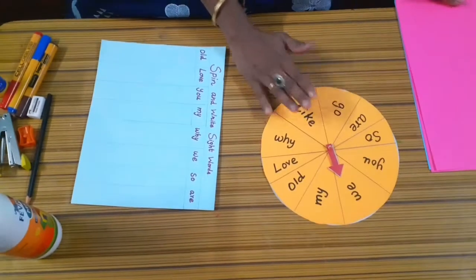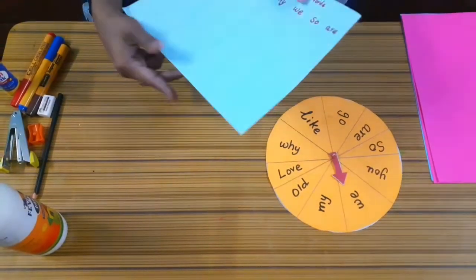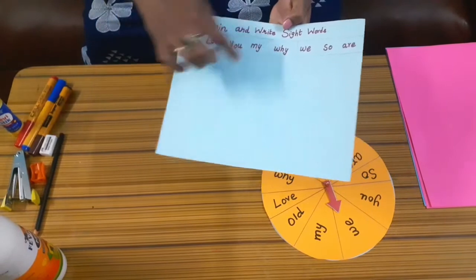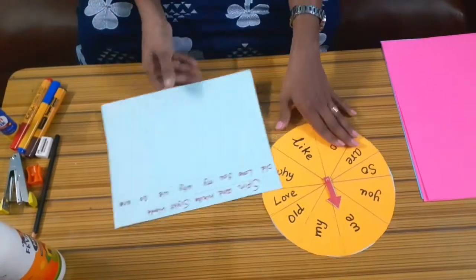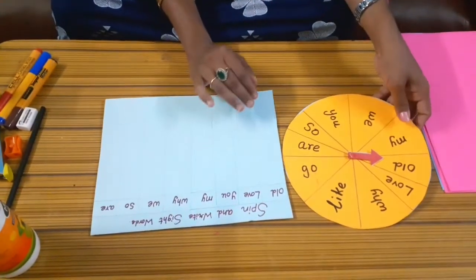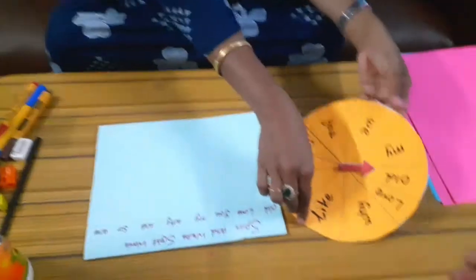Now you are going to spin and learn the sight words and write them. After you do this sight word spinner, next you take an A4 size sheet. Spin and write the sight words as the heading, and draw 10 columns and write the sight words in each column.